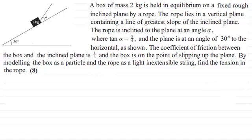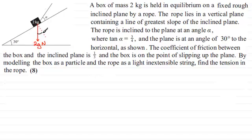First of all, I'd want to mark in the forces acting on the box. The first force I'd put in is the weight, which acts vertically downwards. It's mass times acceleration due to gravity — its mass is 2 kilograms, so that's 2g. I'm going to take g as 9.8 throughout this problem. I'd also put in a dotted line perpendicular to the plane. I'd mark in the tension acting up the rope direction, labelling that T Newtons.